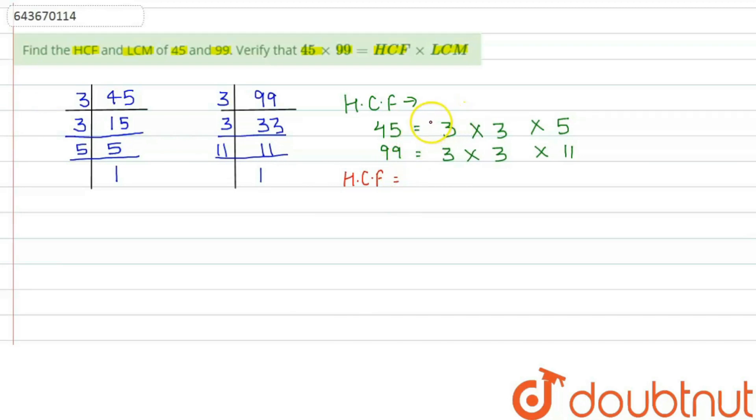Now to find the HCF, we will find the product of those factors which are common in both of the numbers. For example, here we have two pairs of 3, so HCF will be 3 into 3, which is 9.